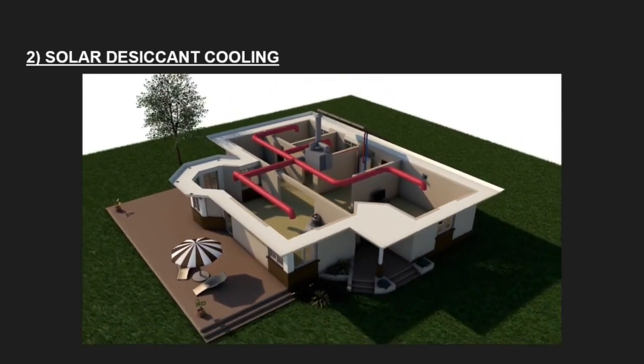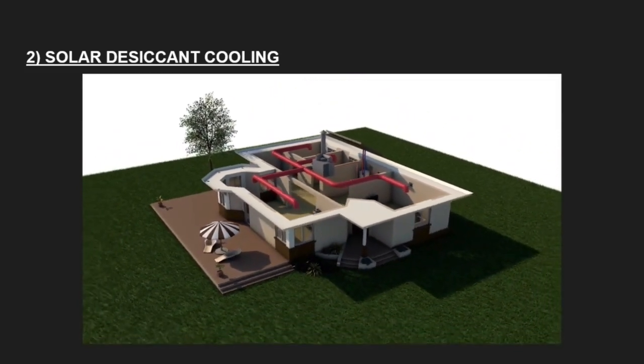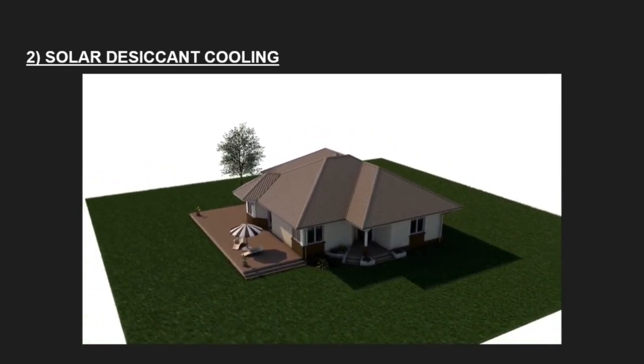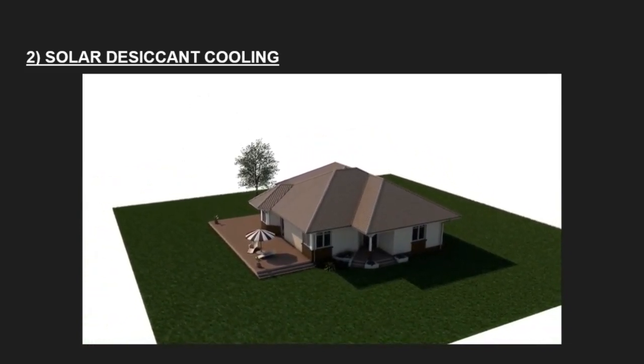CSIRO's solar cooling system is a low emissions alternative to conventional air conditioning and gas or electric powered heating, providing more comfortable homes and reduced energy bills.